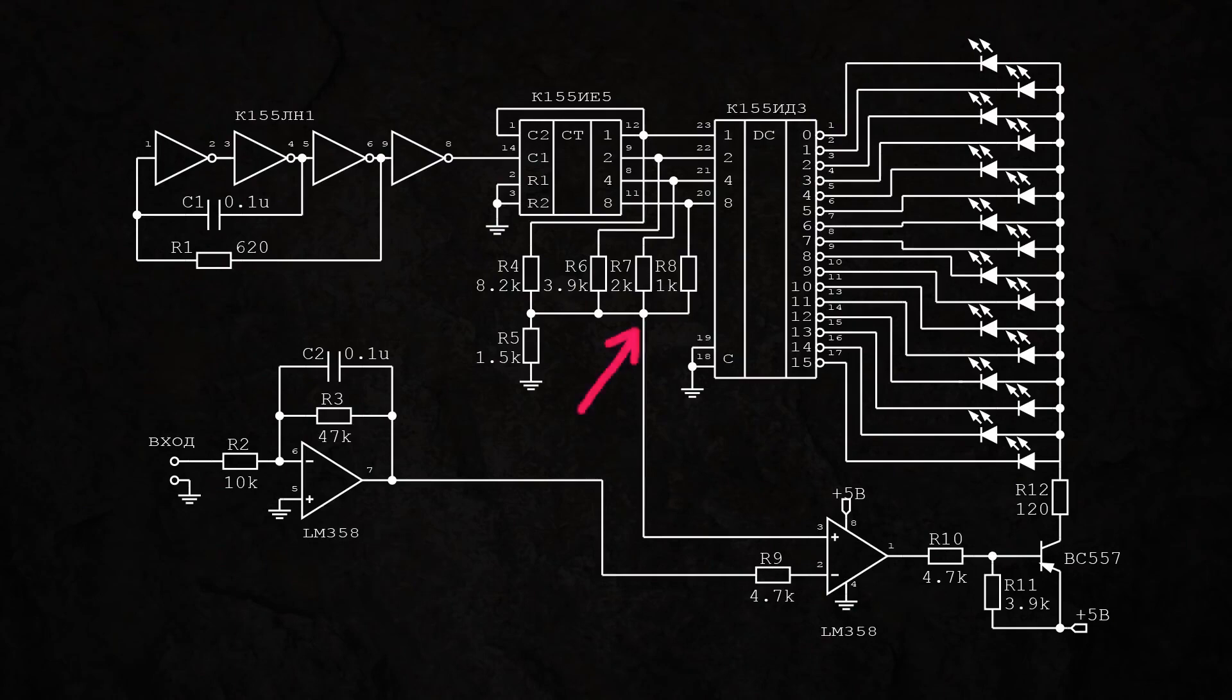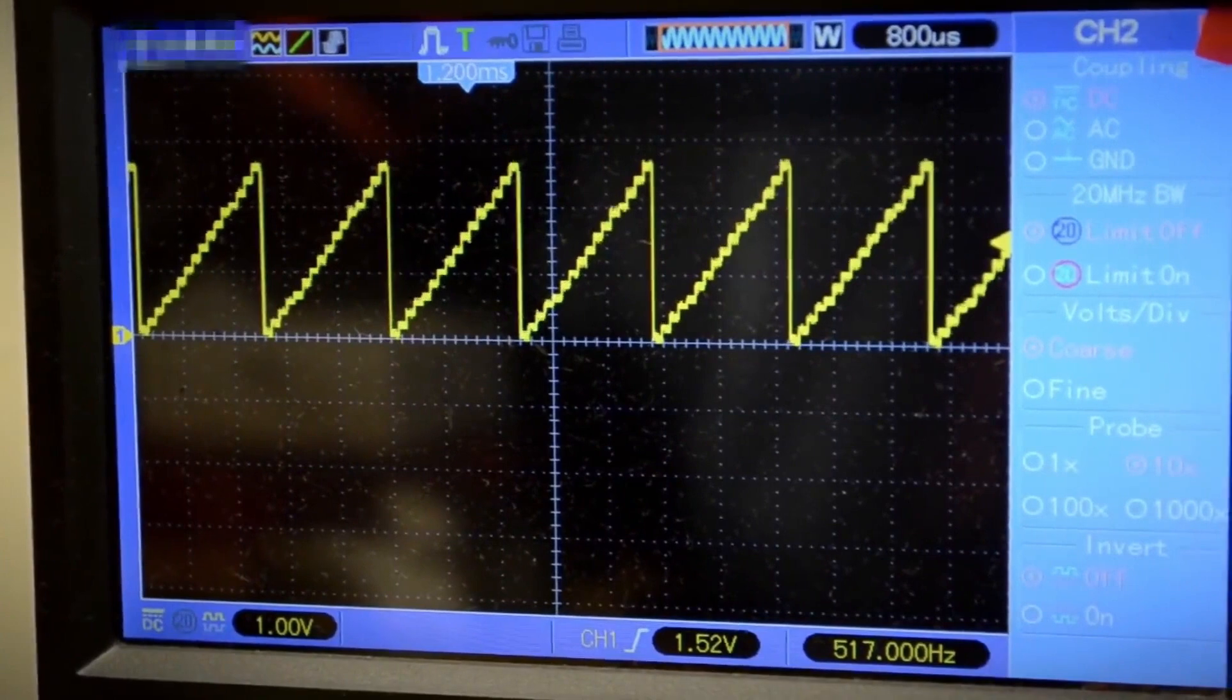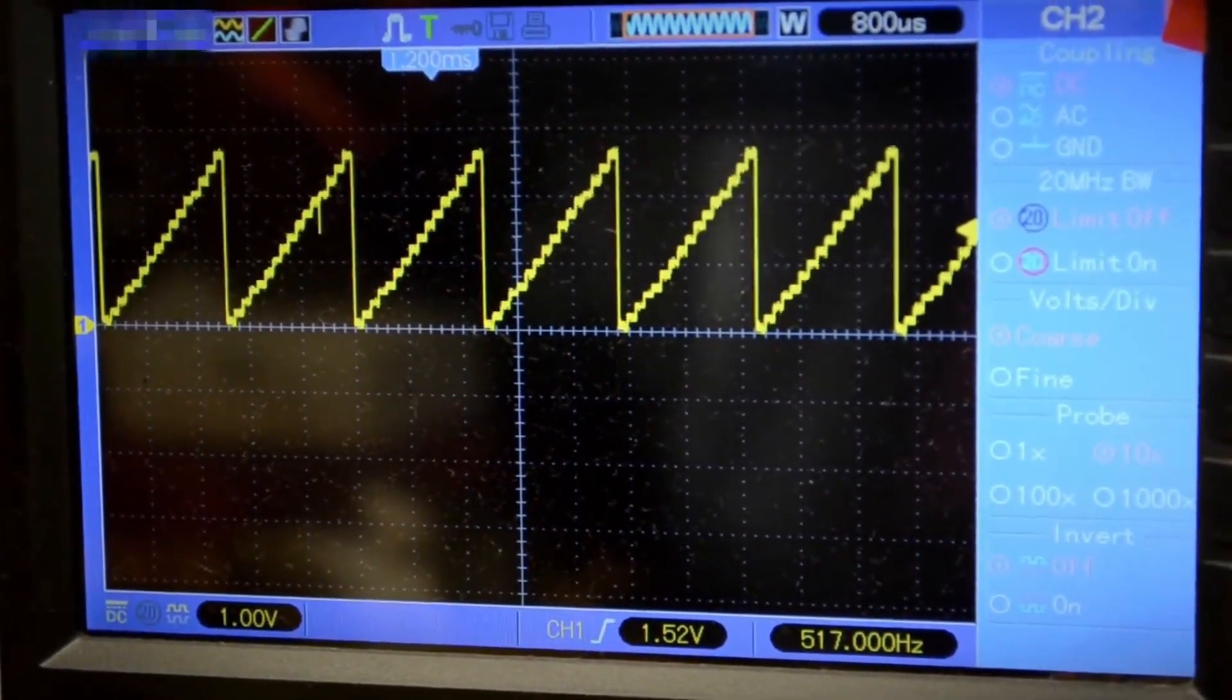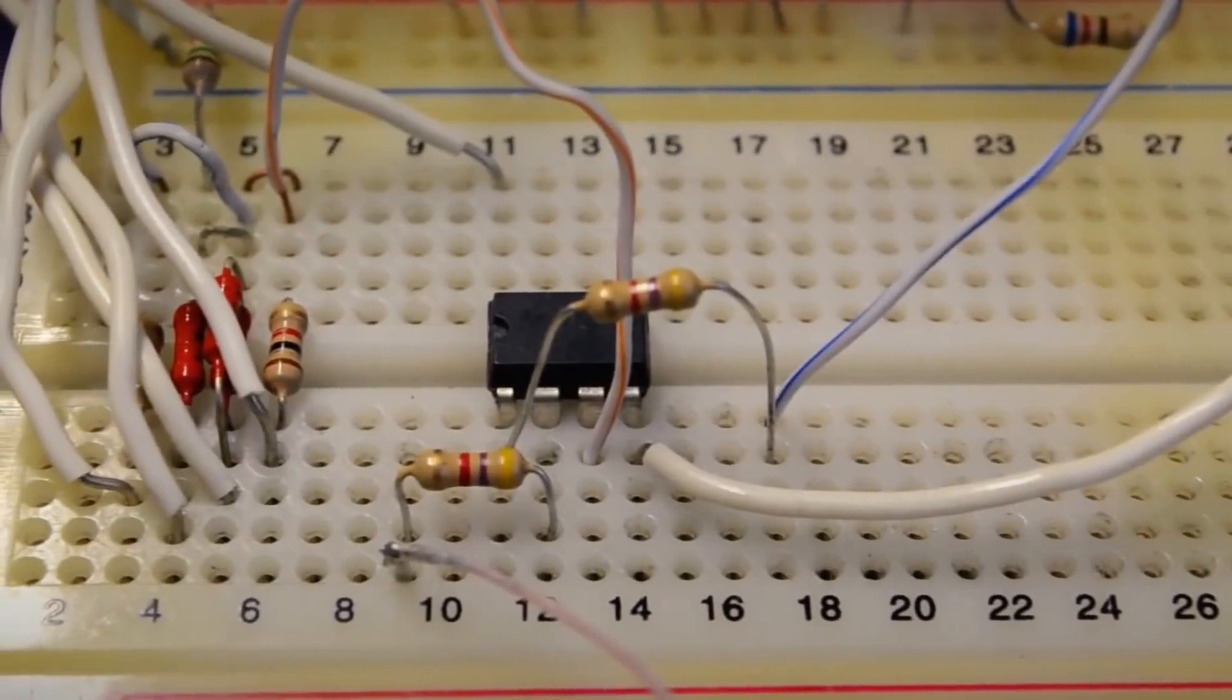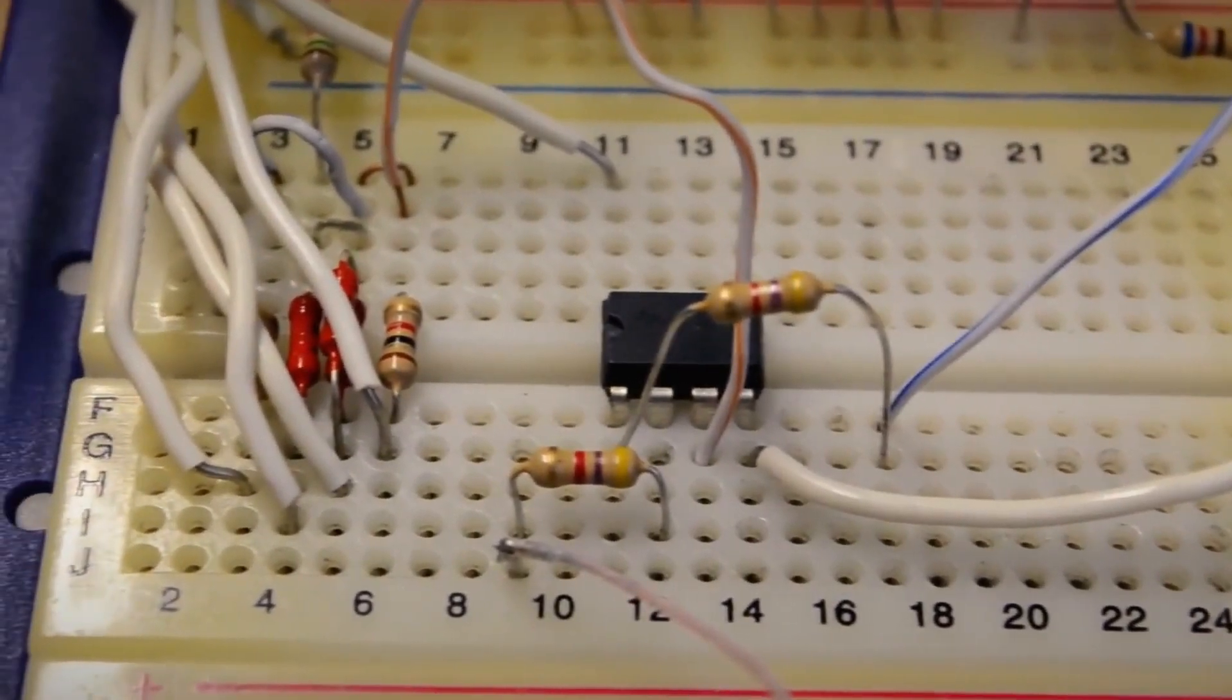If we look at the signal at this point, we will see a sawtooth waveform. This sawtooth signal is fed to the positive input of the operational amplifier, and the voltage on it is compared with the voltage on the negative input. If the voltage on the positive input is less than on the negative input, then the output is a logical 0.